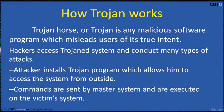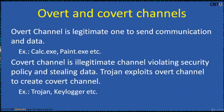A Trojan is any malicious software program which misleads the user of its true intent. It gets installed along with genuine software at the back end, and hackers access the Trojan system to conduct many types of attacks. Hackers install a Trojan program which allows remote access from outside. Commands are sent by the master and executed on the victim's system. An overt channel is a legitimate channel for sending communication and data — open and legal applications like a calculator or paint. A covert channel is an illegitimate channel that violates security policy and steals data. Trojans exploit the overt channel to create a covert channel — hidden elements like a Trojan keylogger.